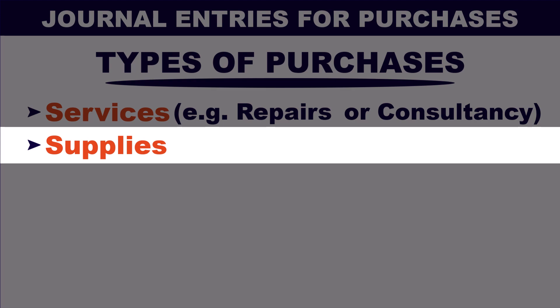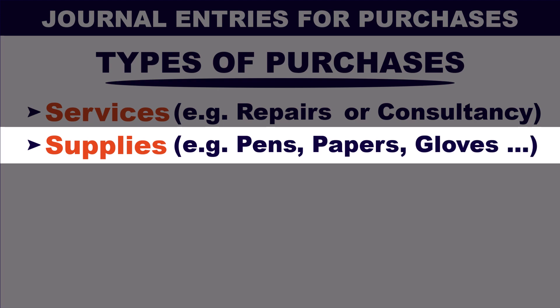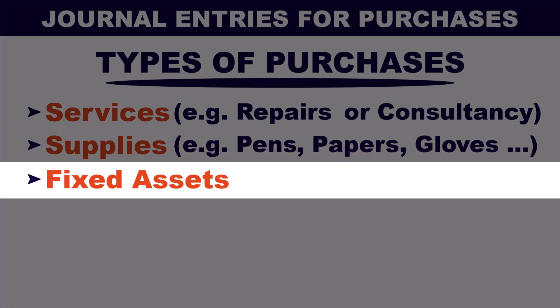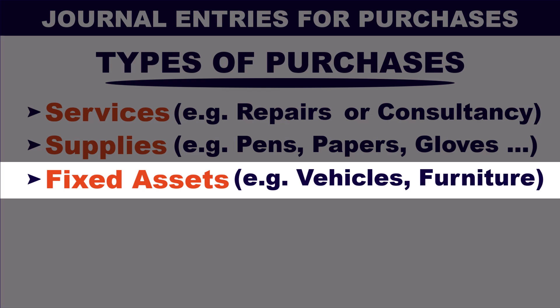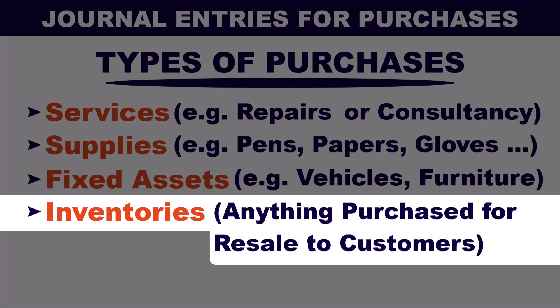Examples of supplies include office supplies like pens, papers, or cleaning supplies like gloves, paper towels and so on. The other type is purchase of fixed assets like vehicles, furniture and so on. The last type is purchase of inventory. Inventories are assets that are held by a company for sale to customers.